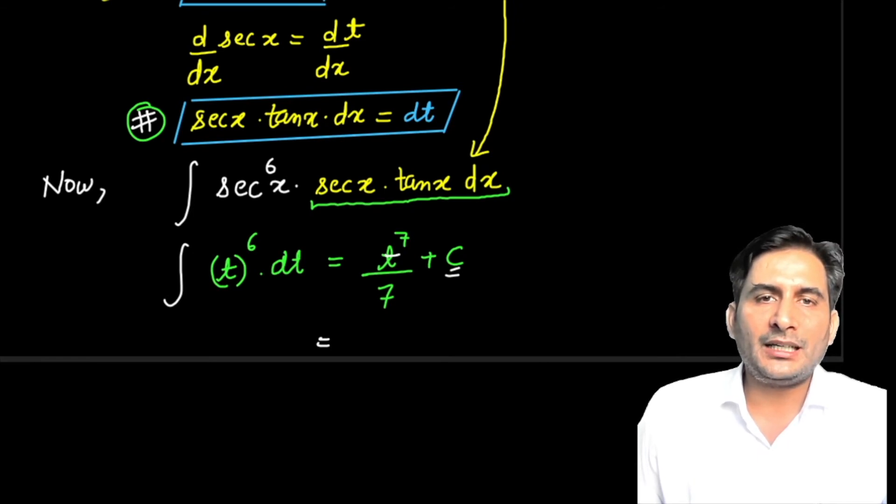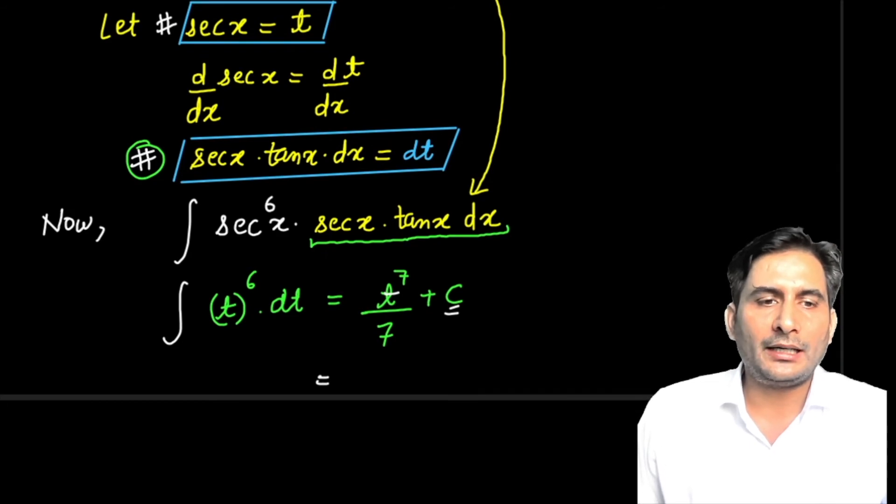Now for the answer, replace t back. What did we let t equal? It's hidden above - t was let as sec(x). So place it here: sec^7(x) divided by 7 plus C.